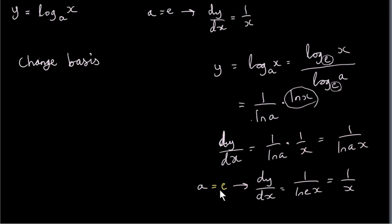In particular, if a happens to be equal to e, the number e, then dy/dx is 1 over ln of e times x. But ln of e is log to the base e of e, which is just 1. So we get 1 over x, as expected, as we saw in the previous video when a is e.